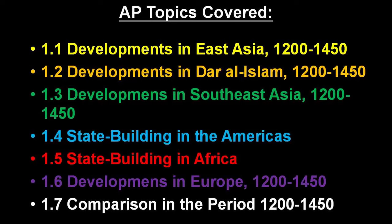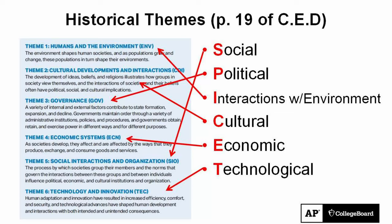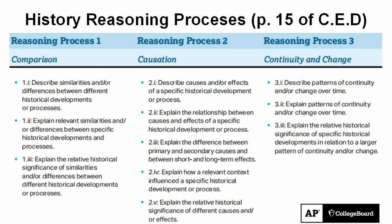All of the topics from Unit 1 will be covered, and we're going to review them using the framework of the six historical themes, as well as the three history thinking processes. We believe that's the best way to review. At the end of the lesson, we'll also look at some AP exam examples from previous years, so we can see how our knowledge of the content and the skills can get us results in real life.